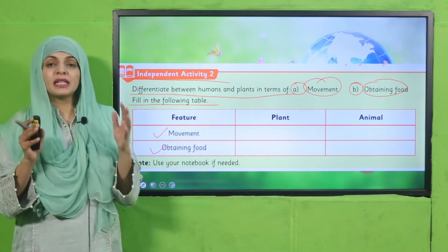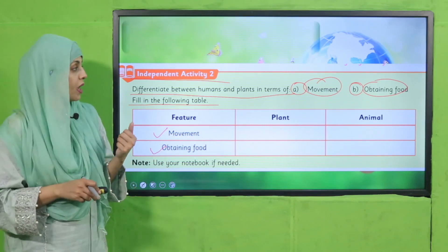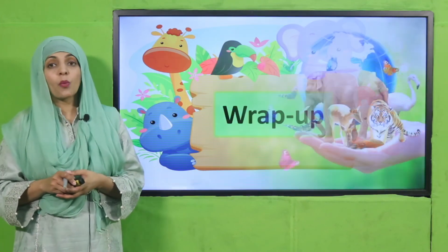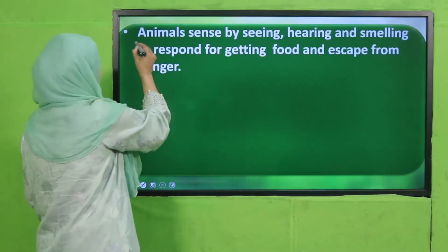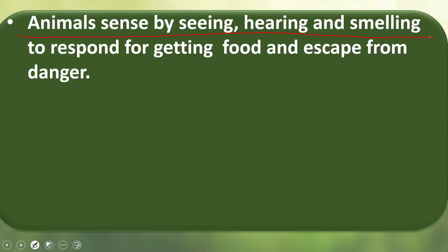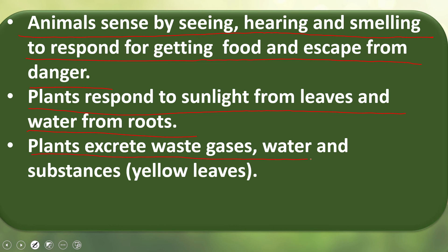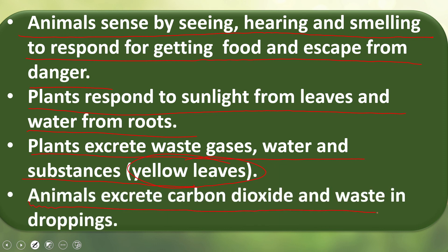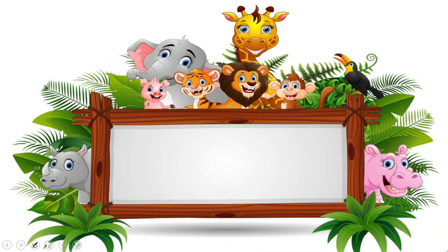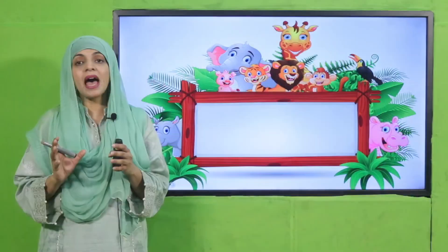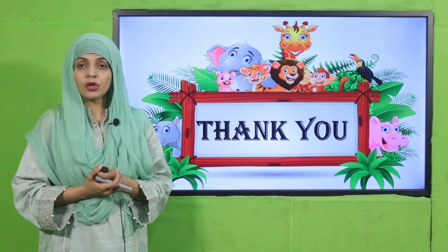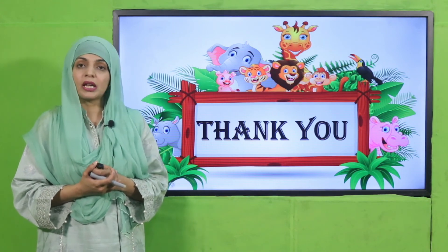Wrap-up: today we learned that animals sense by seeing, hearing, and smelling to respond for getting food and escaping danger. Plants respond to sunlight from leaves and water from roots. Plants excrete waste gas, water, and substances through yellow leaves. Animals excrete carbon dioxide and waste in droppings. We have studied two more characteristics of plants and animals: sense and response, and excretion. I hope you enjoyed today's lecture. Keep everybody around you safe, have a good day, thank you so much.